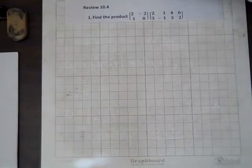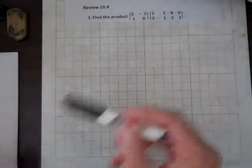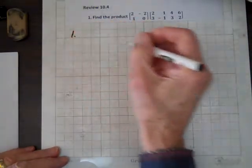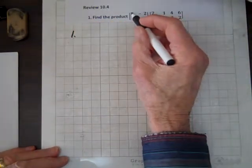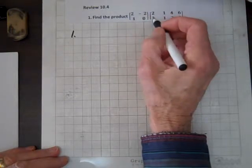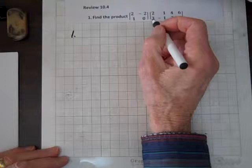Well, now we're doing the review for 10.4, and we've got to find the product of these two matrices. So the product is, we multiply row times column to find each entry.